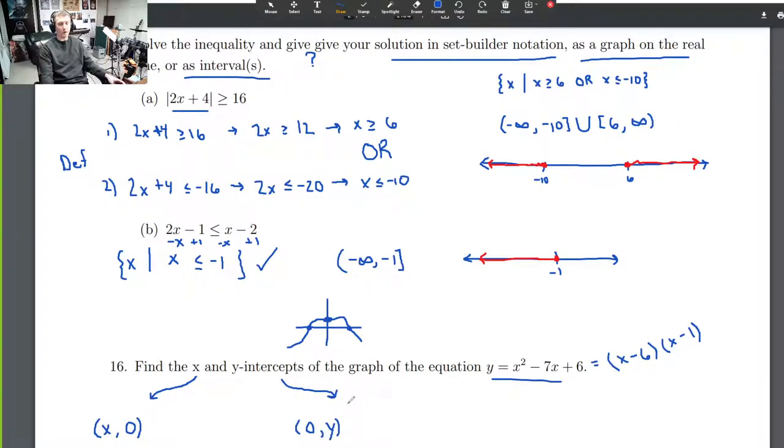Let's find the y-intercept first. What do we do for the y-intercept? We plug in 0 for x. So y = 0² - 7(0) + 6. So what is the y-intercept? (0, 6). Done. To find y-intercepts, just plug in 0 for x, and you've got it.